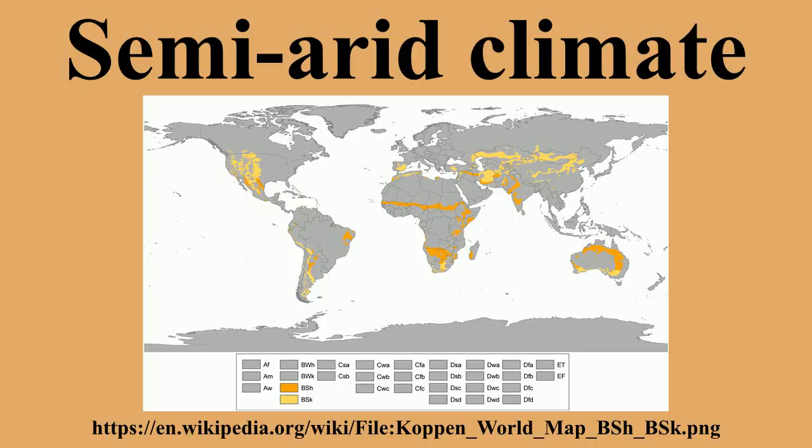Cold semi-arid climates tend to be located in temperate zones. They are typically found in continental interiors, some distance from large bodies of water. Cold semi-arid climates usually feature hot and dry summers, though the summers are typically not quite as hot as those of hot semi-arid climates. Unlike hot semi-arid climates, areas with cold semi-arid climates tend to have cold winters.